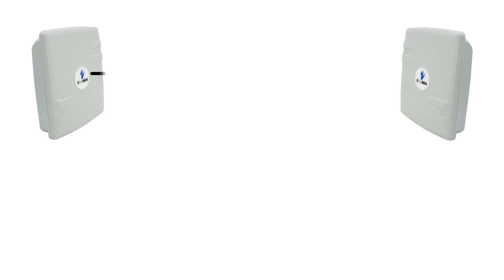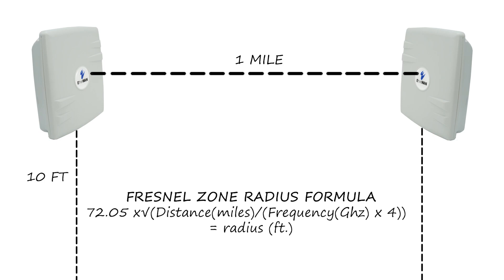Calculating your Fresnel Zones can help avoid obstructions. Usually, the antenna should be at a height of 10 feet for every mile it needs to send the signal, depending on the frequency. But for the exact Fresnel Zone radius calculation, simply use this formula here, or click the link in the description.